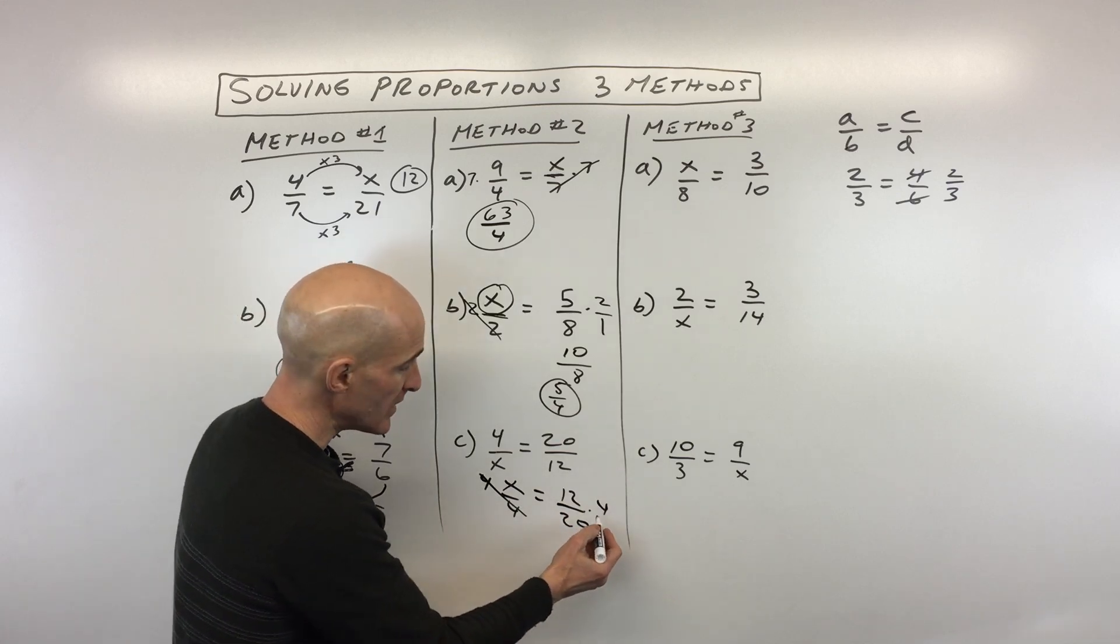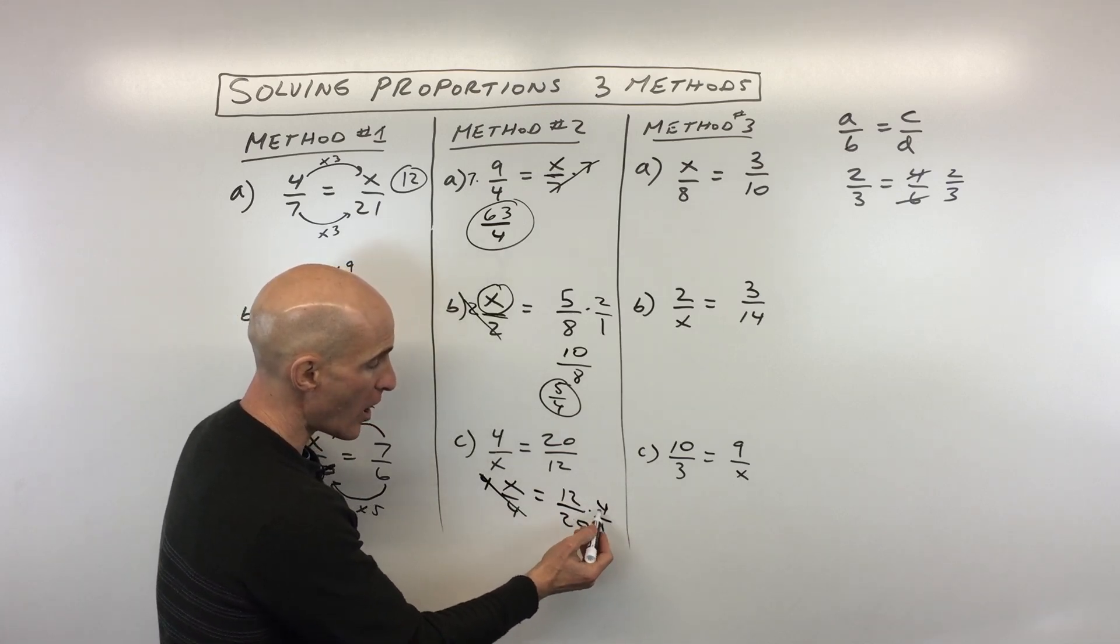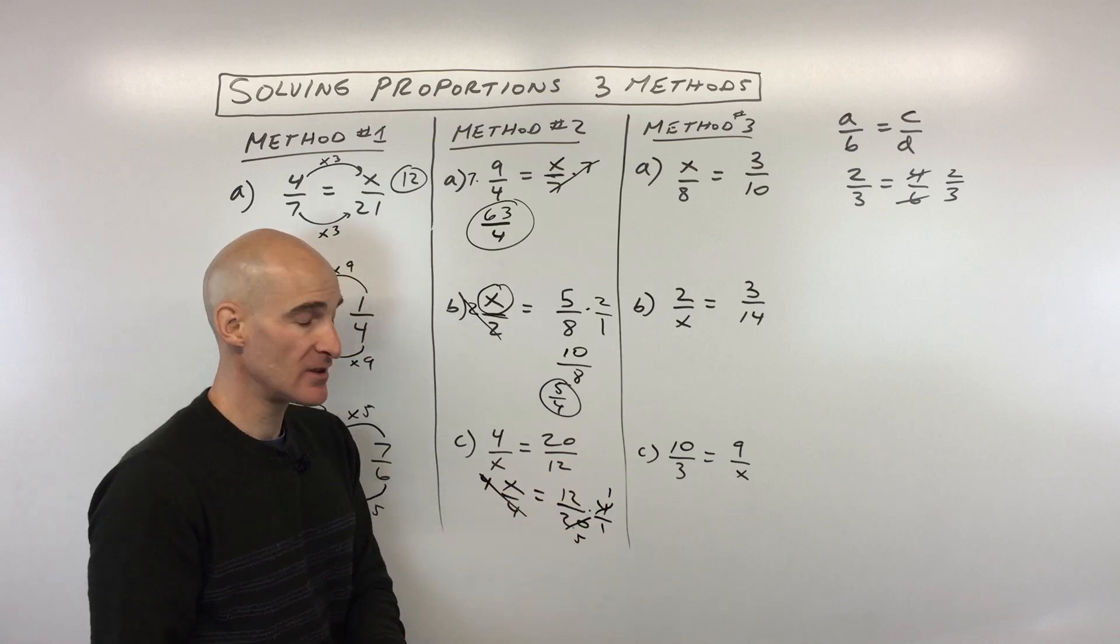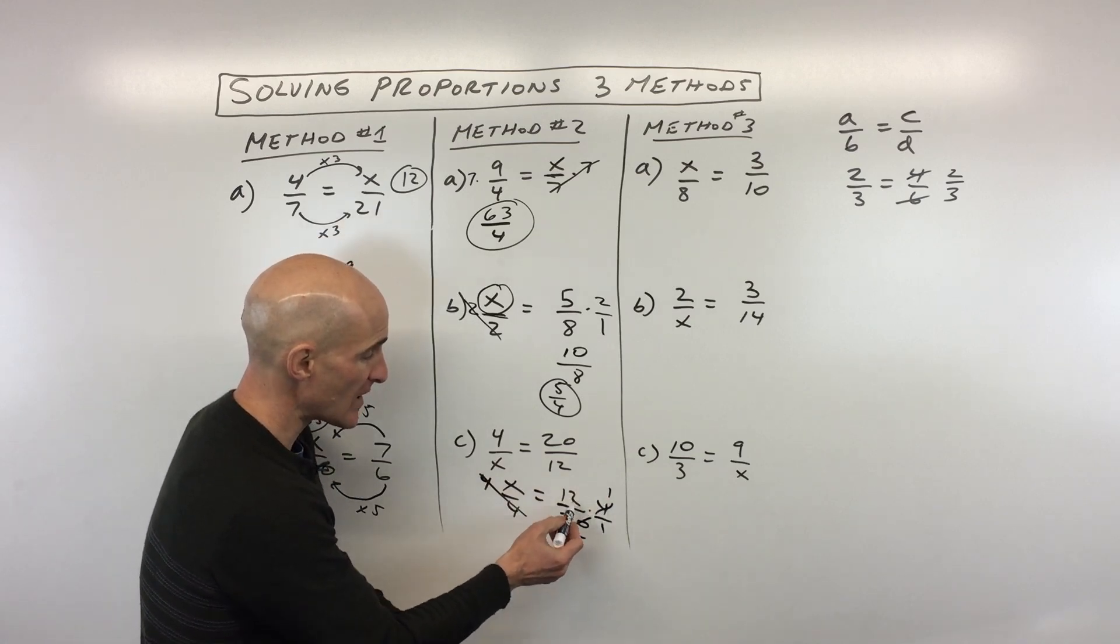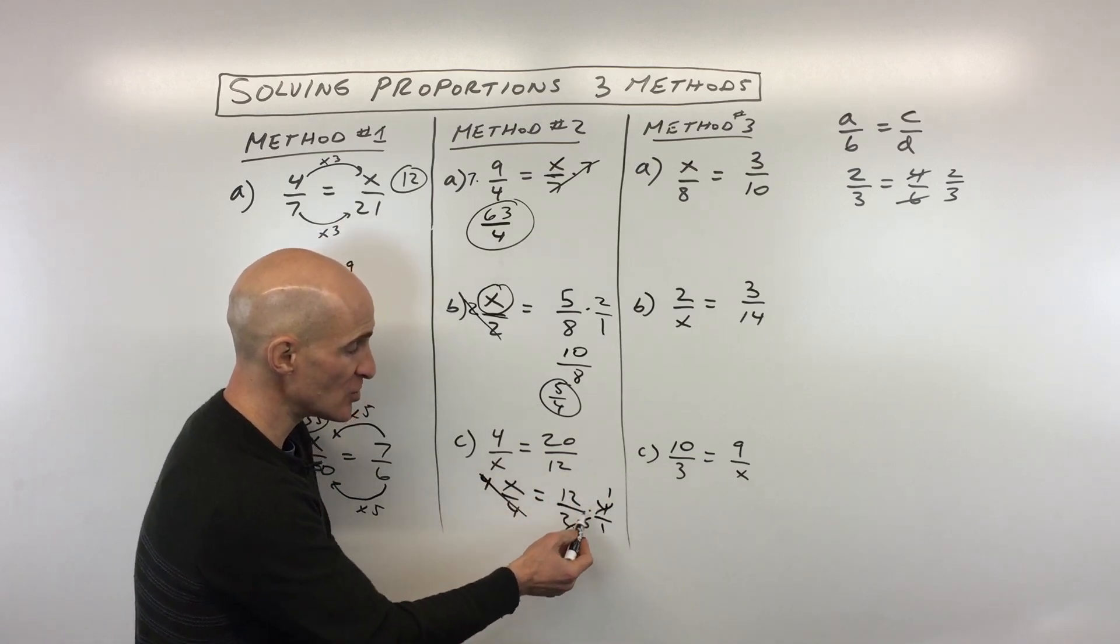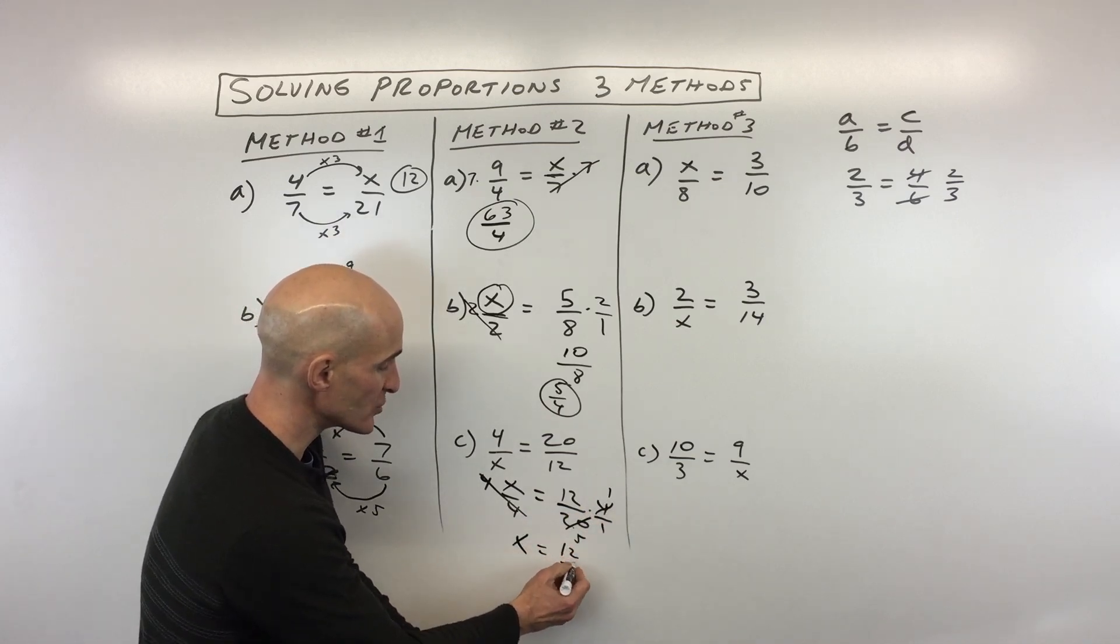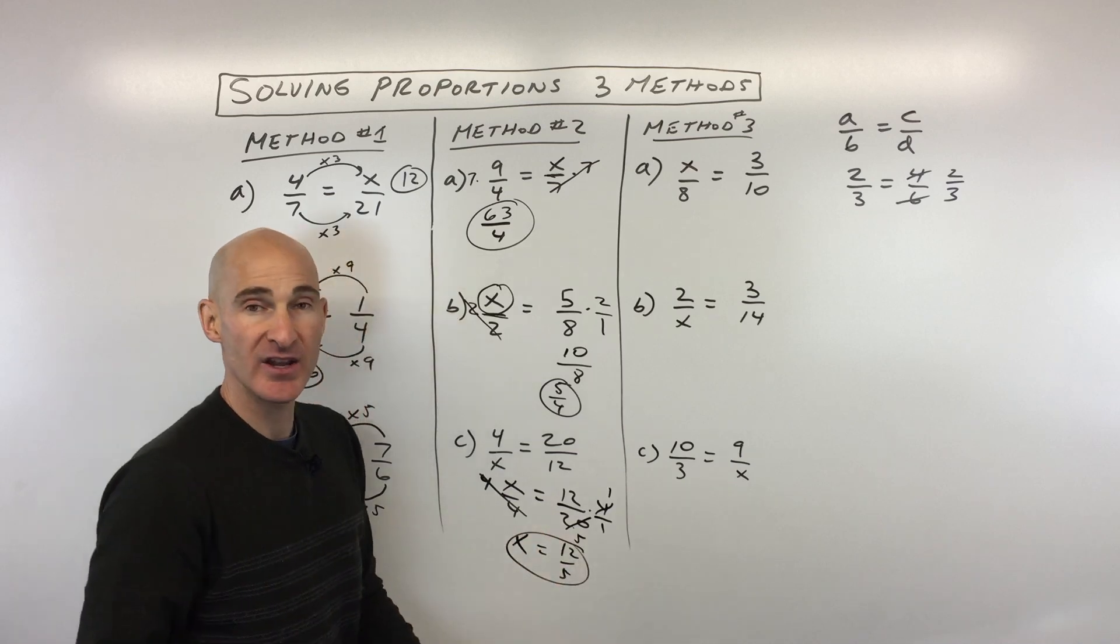And what I'm going to do on this one is a little bit different, I'm going to do some cross reducing. So I'm going to say 4 goes in here once, 4 goes into 20 five times. So as long as you reduce numerator and denominator, it doesn't matter whether it's in these two fractions, or this fraction, this fraction, you can reduce like that on the diagonal. And so here you can see we're getting x equals 12/5. And you got it.